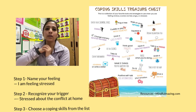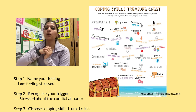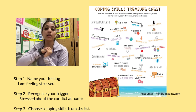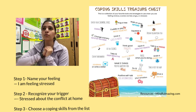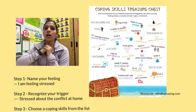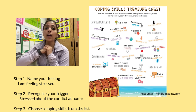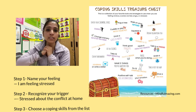Yesterday we talked about some coping strategies that we could use when we feel anxious. So what are the three steps? The first step is to name the feeling. For example, if I am scared, I would name it — I would say it out loud: I am feeling scared, or I am feeling stressed.